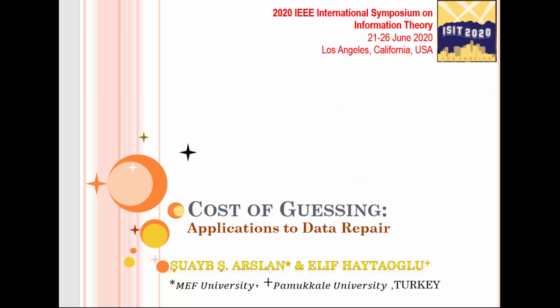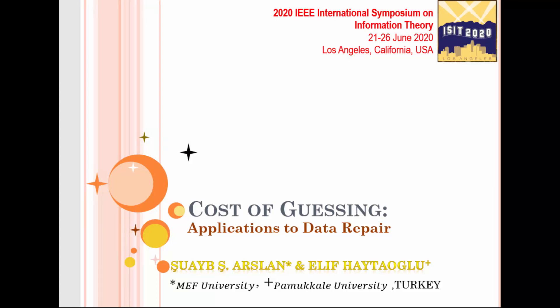This study is about a generalization to the standard guesswork. In this generalization, we assume that each choice in a finite set of values is associated with a fixed constant cost value. Then, instead of minimizing the number of attempts to guess the right value, we focus on minimizing the total aggregated cost of guessing the right value. We'll talk about the optimal guessing strategy as well as lower and upper bounds on the moments of guessing cost, and later this generalization will find interesting applications that we shall touch upon in the last few slides.